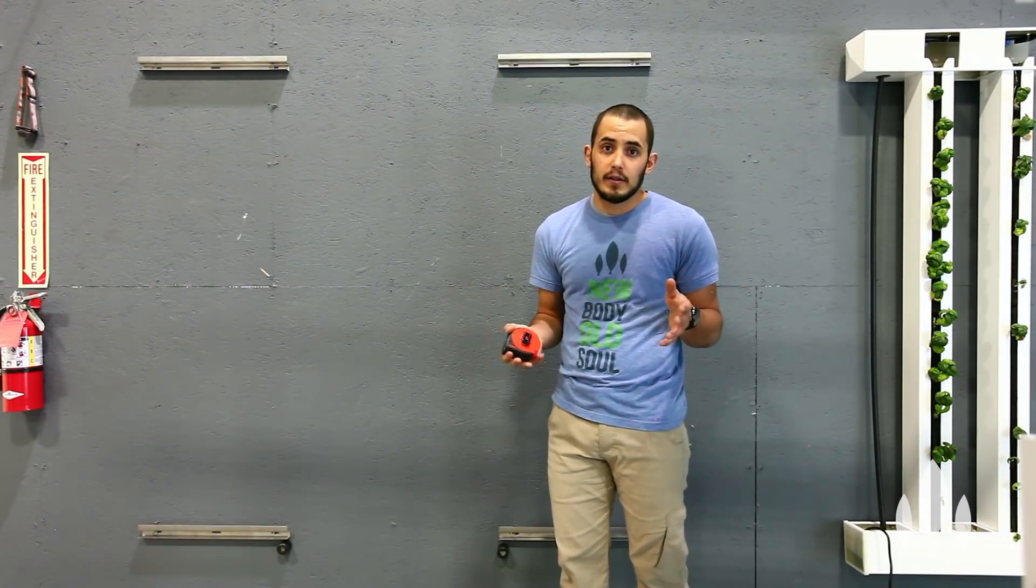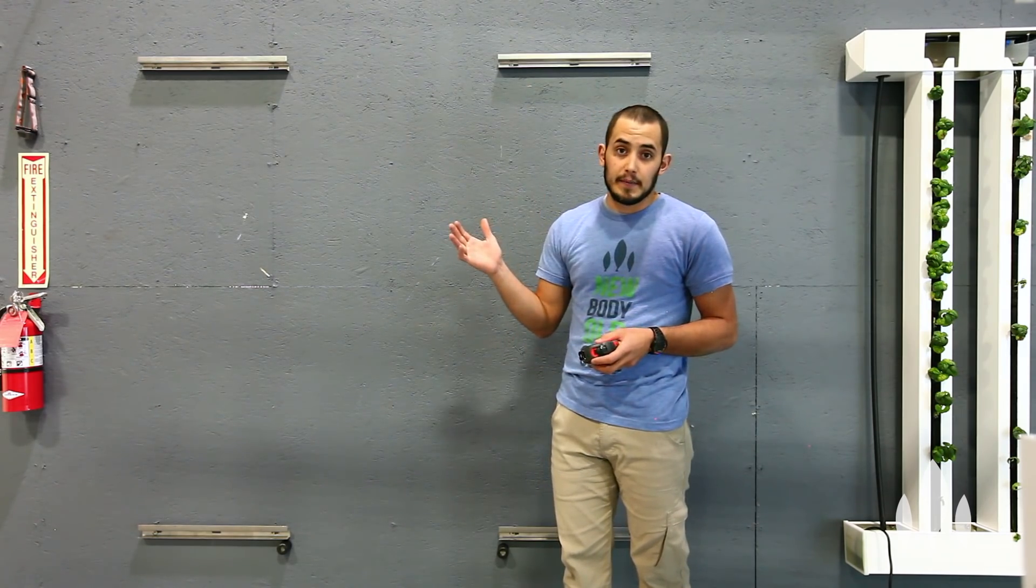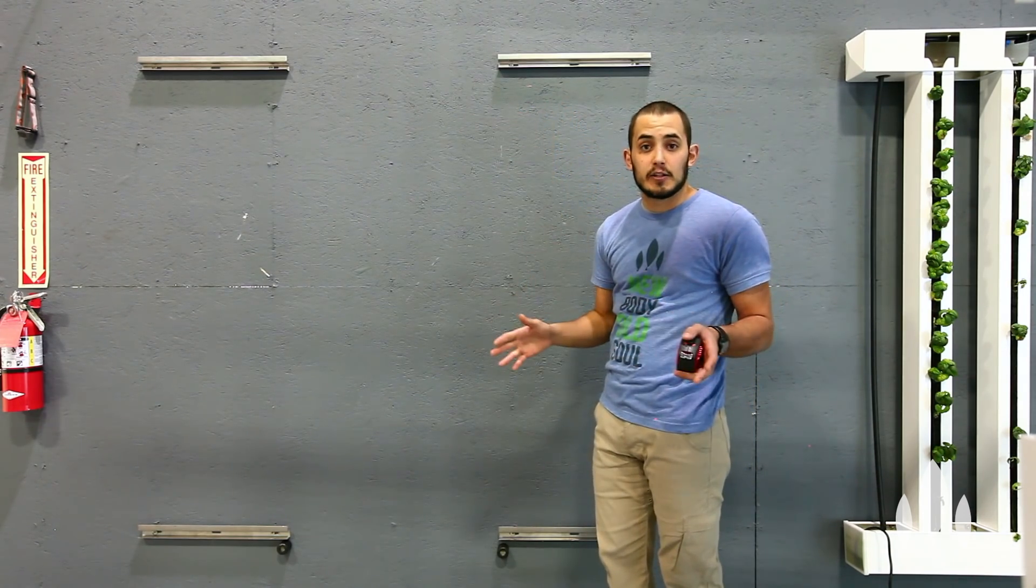So we'll be mounting four wall channels for an eight-tower farm wall, one for each clip. Now, the vertical spacing between these channels is completely dependent on the size of your towers.